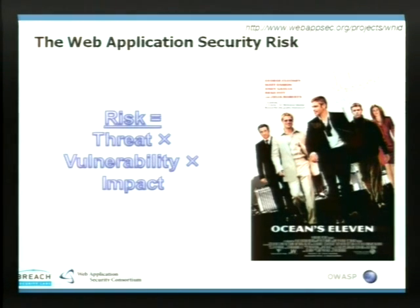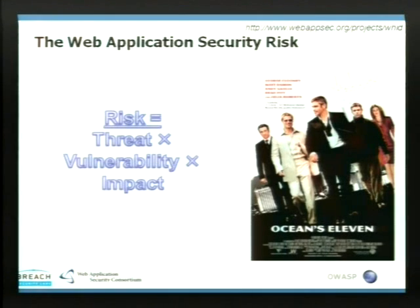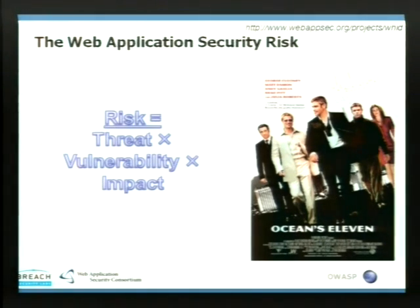The basic equation we'll talk about is how to calculate risk. It's not technical, but it's the sole reason our companies are paying us — to reduce risk. Risk is composed of three things: threat (is there anyone out there who's after us?), vulnerability (if there is someone after us, do they have any way to breach our security?), and the outcome (how much would we lose if they succeed?). This is an old equation. The main question is how does it translate to web applications?